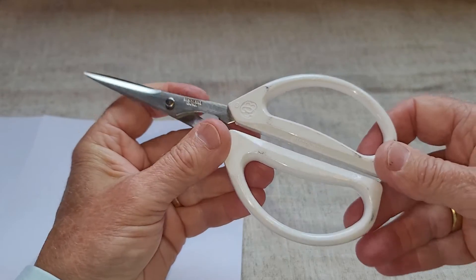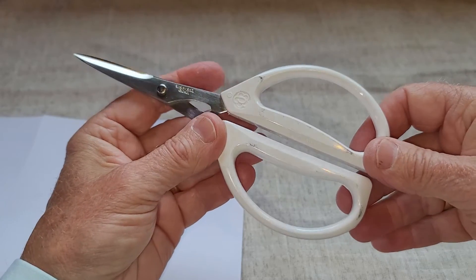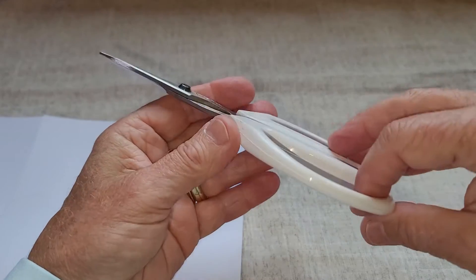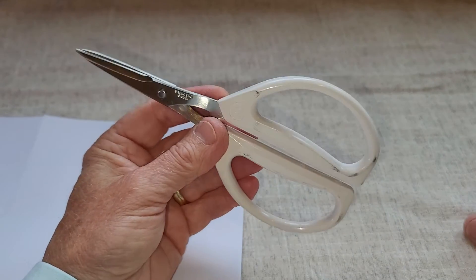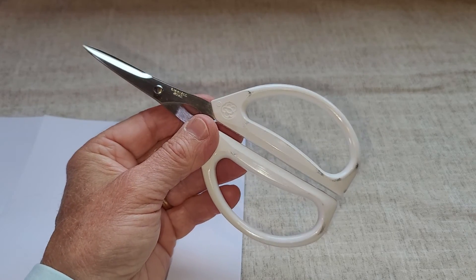I really like these Joyce Chen scissors. They work amazingly well, especially cutting through tougher materials. You can use them in the kitchen - say you don't want to grab a knife, you can use these scissors for cutting through some tougher materials.